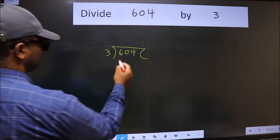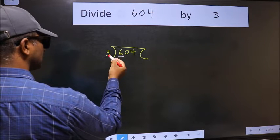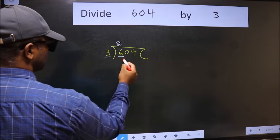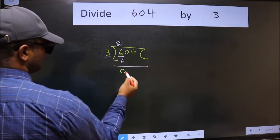Next. Here we have 6 and here 3. When do we get 6 in the 3 table? 3 times 2 is 6. Now we should subtract. We get 0.